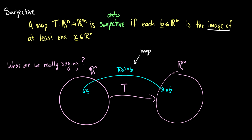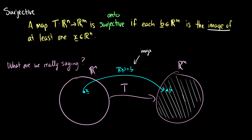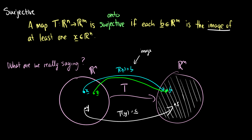It's surjective if every b — this whole space, all of the vectors in this space — are the image of at least one x in Rⁿ. So every single vector in Rᵐ can be achieved or computed using the transformation on some vector in Rⁿ. We could have another vector z that also maps to b, and that is perfectly okay. But everything in Rᵐ has to be covered. That's surjective.